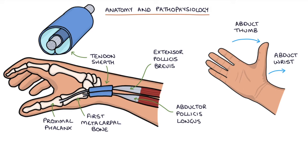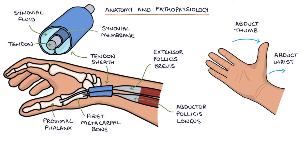Tendon sheaths can surround tendons. A tendon sheath is formed by connective tissue, specifically synovial membrane, that covers the tendons and is filled with synovial fluid. The tendon sheaths help to lubricate and protect the movement of the tendons within them.